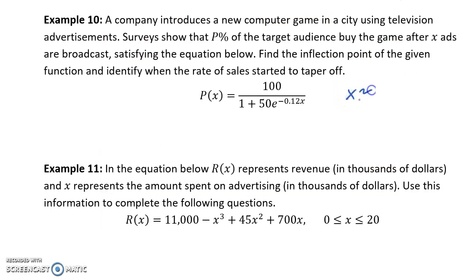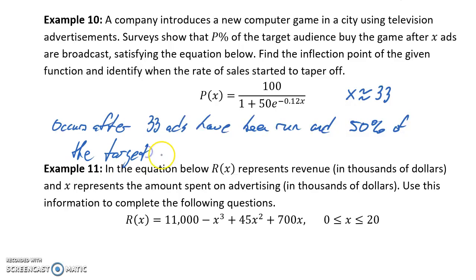So our inflection point occurs at approximately x equals 33, which tells us that the point of diminishing returns occurs after 33 ads have been run, and at that point about 50% of the target audience, since that was the result for our function evaluated at about x equals 33, about 50% of the target audience has bought the game.